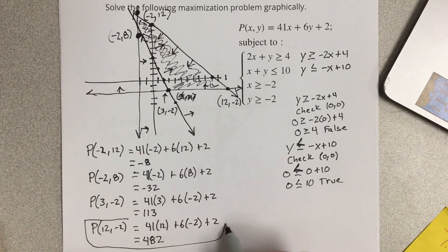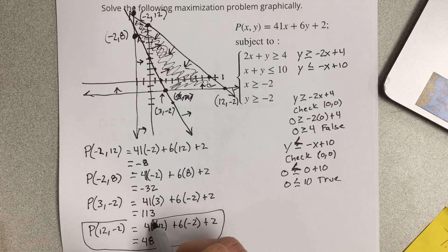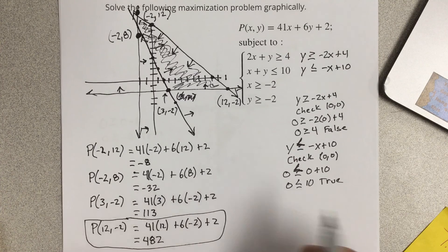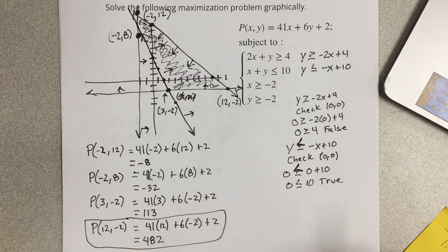When maximizing, we can see 482 is the largest value. So the coordinate (12, negative 2) gives us the maximum of 482.